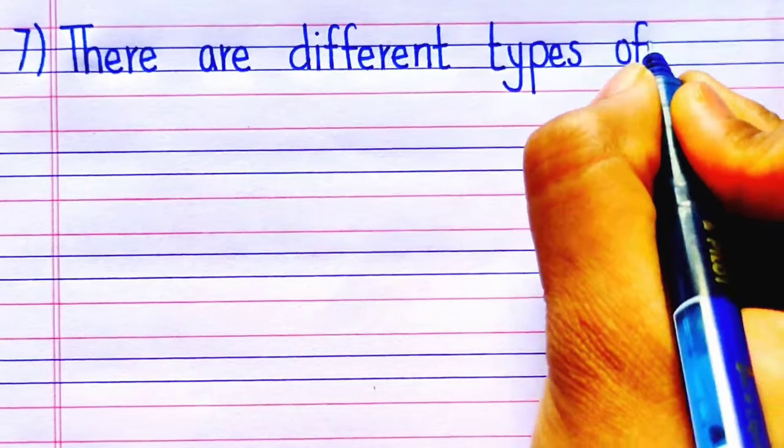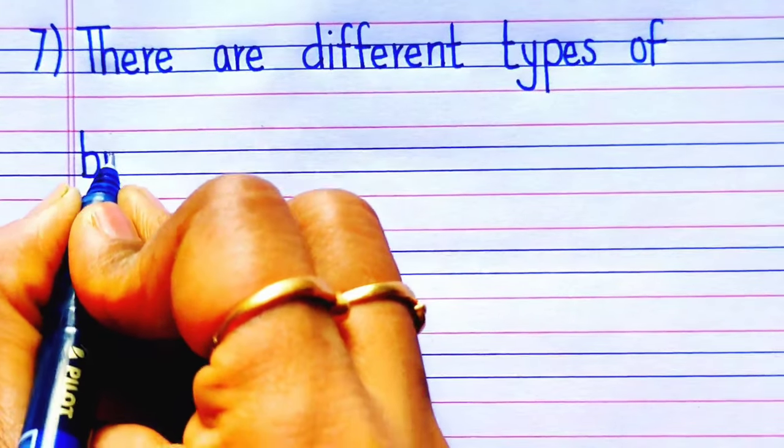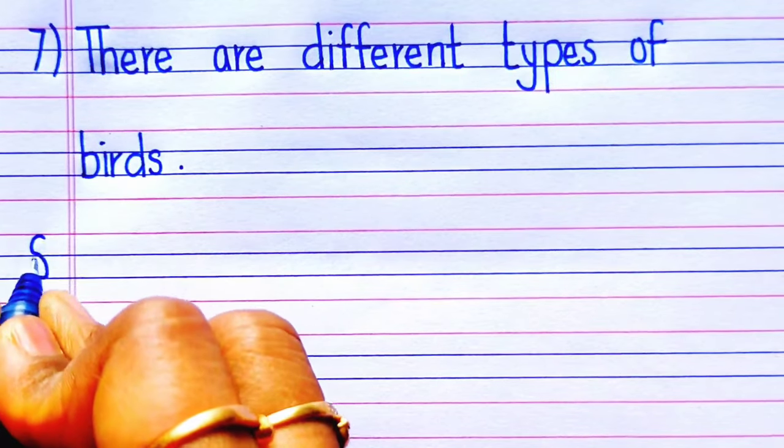The seventh sentence is: there are different types of birds.